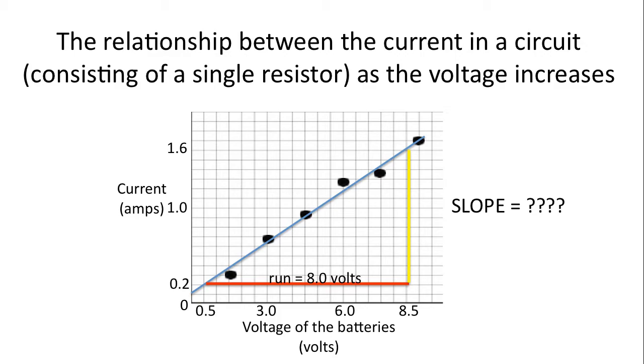The run is 8 volts and I like to see it labeled in the graph. And the rise is 1.4 amps. Again, I also like to see that labeled. Please remember to include the units whenever you write a number down.